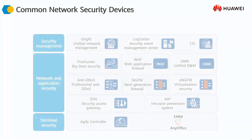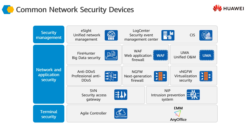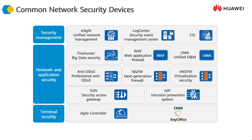This image presents more or less the complete enterprise security portfolio of Huawei. On the left-hand side we have the network and application security products. We also have terminal security products, which provide the functionality to effectively protect our terminal devices, and then the overall security management products, which are used to manage this entire network, application, and terminal security infrastructure.